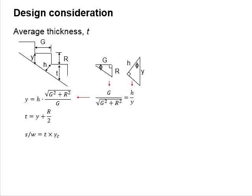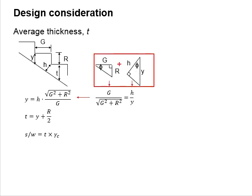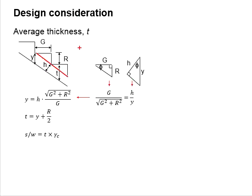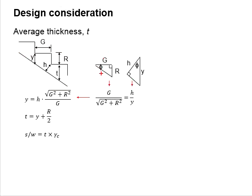Now, the question is: how do we convert the waist h to the vertical distance y? This can be done using simple ratios based on trigonometry and the principles of right-angled triangles. The inclined surface of the staircase is theoretically parallel to a construction line joining the corners of each step. Therefore, based on the riser and the going, we are able to determine the inclined angle of the staircase, which we denote using the symbol phi. Based on the principles of trigonometry, the relationship between h, y, and angle phi is represented by the diagram here.